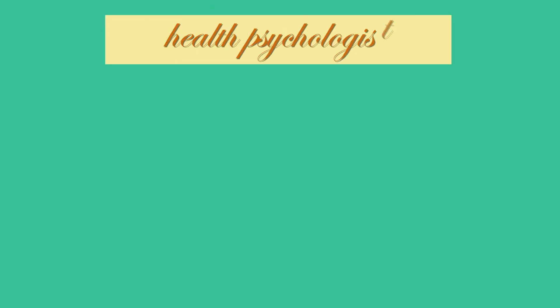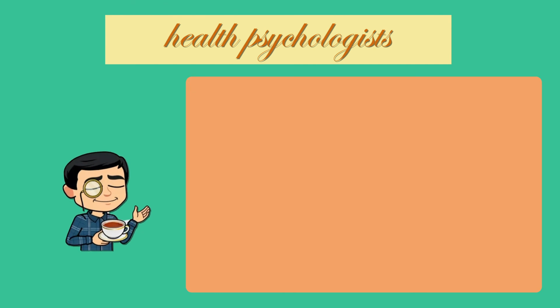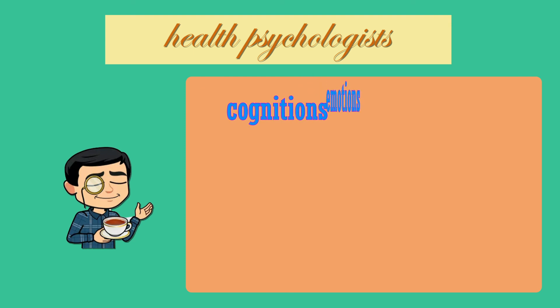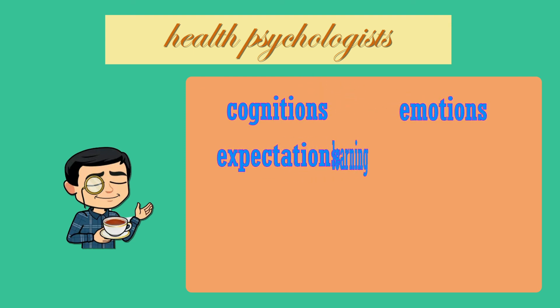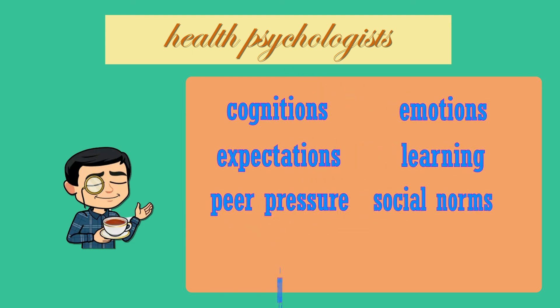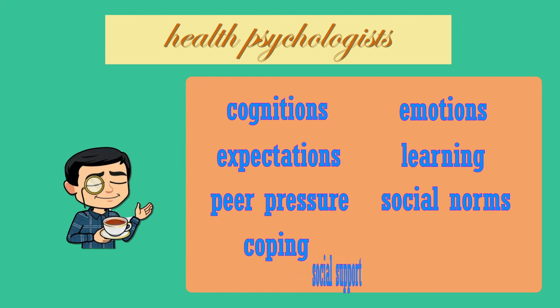For health psychologists, these factors are central to the discipline and include a wide range of psychological variables such as cognitions, emotions, expectations, learning, peer pressure, control, social norms, coping, and social support.